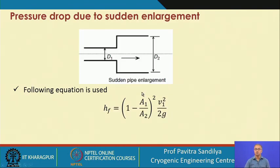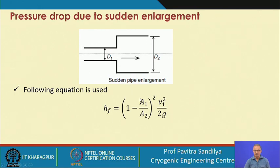We show how to find the equivalent length for some valves and fittings, and how to find the head loss in a sudden enlargement. The expression for head loss in sudden enlargement is given, where the diameter changes abruptly from d₁ to d₂. Here A₁ = (π/4)d₁² and A₂ = (π/4)d₂², and v₁ = Q̇/A₁ is the velocity at the upstream section. From these, we can find the head loss in the case of sudden enlargement.